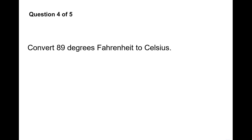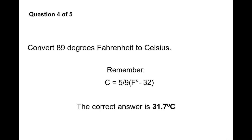Question 4. Convert 89 degrees Fahrenheit to Celsius. Remember, degrees Celsius is equivalent to 5/9 times the temperature in Fahrenheit minus 32. The correct answer is 31.7 degrees Celsius.